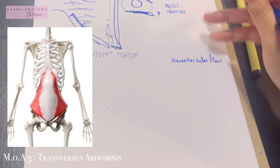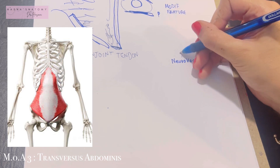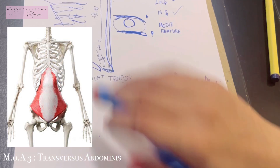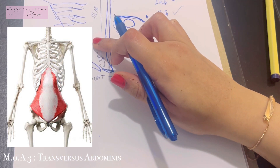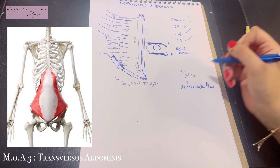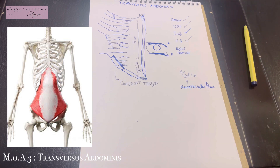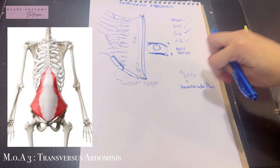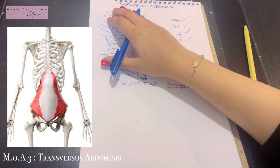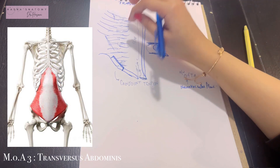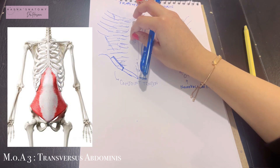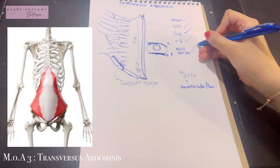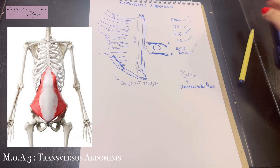Another very important feature is the neurovascular plane of the abdomen, which lies between the transversus abdominis and the internal oblique. This means all the major vessels and nerves of the abdomen run between these two muscles. Deep to the transversus abdominis lies the next layer, the fascia transversalis.